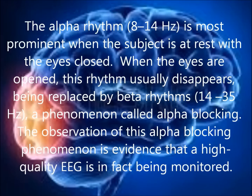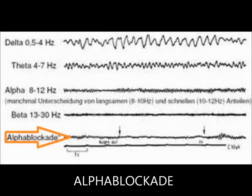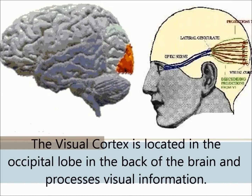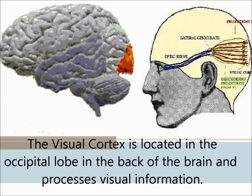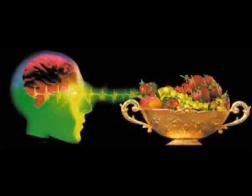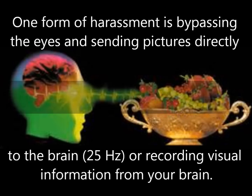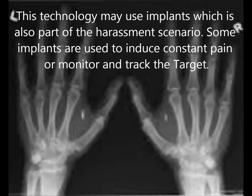The observation of this alpha blocking phenomenon is evidence that a high quality EEG is in fact being monitored. The visual cortex is located in the occipital lobe in the back of the brain and processes visual information. One form of harassment is bypassing the eyes and sending pictures directly to the brain, or recording visual information from your brain. This technology may use implants, which is also part of the harassment scenario. Some implants are used to induce constant pain or monitor and track the target.